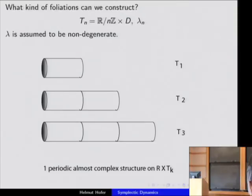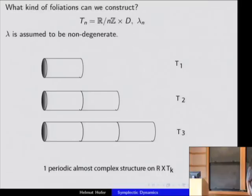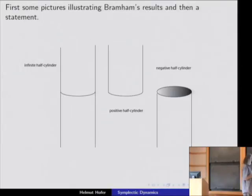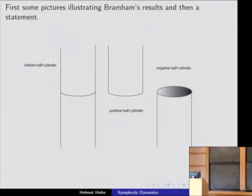You want to create foliations in this torus by projected holomorphic curves, giving a singular foliation consisting of surfaces transversal to the flow or periodic orbits. If the disk map is generic, you would have a finite number of periodic orbits and surfaces otherwise spanned by these periodic orbits. In this case, the leaves are either an infinite annulus or a cylinder with boundary, positive or negative — referring to the R-direction, meaning whether you go to plus or minus infinity, saying something about the orientation of how you hit the periodic orbit.